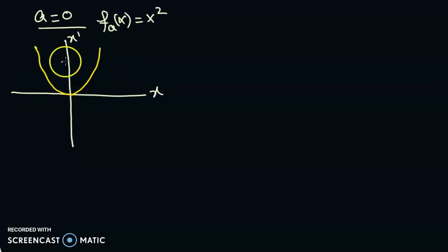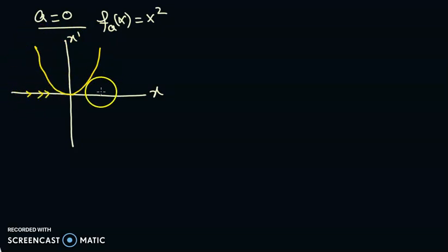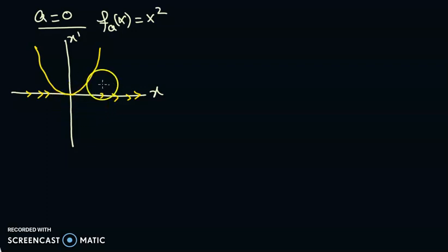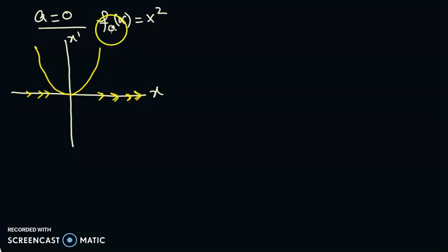From the side where x is less than zero, the flow is approaching towards the equilibrium point, while on the other side the flow is moving away from the equilibrium point. Now we move towards constructing the bifurcation diagram.